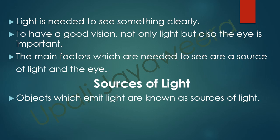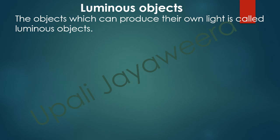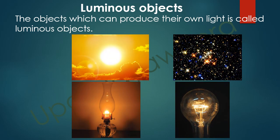Objects which emit light are known as sources of light. Objects which can produce their own light are called luminous objects. For example, the sun produces light and emits it, so the sun is a luminous object.